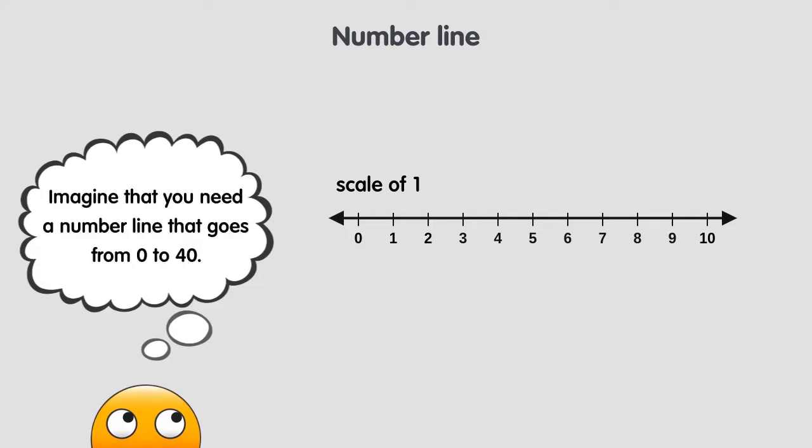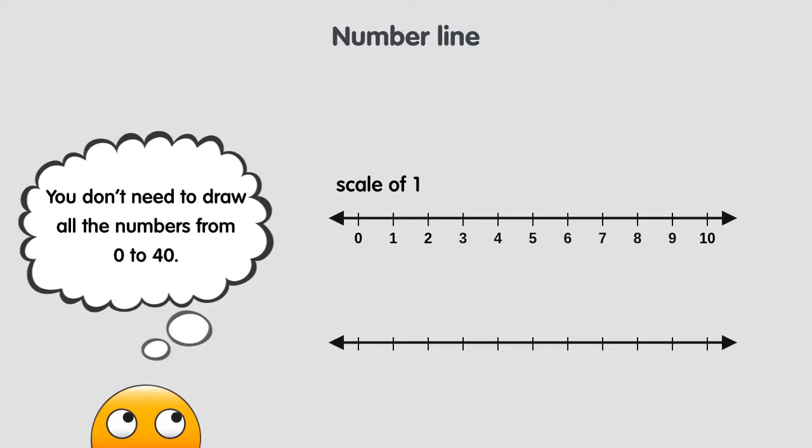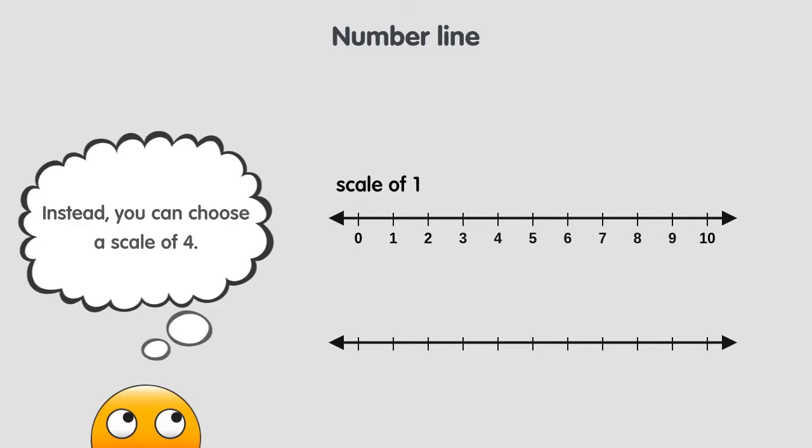For example, instead of a number line from 0 to 10, maybe you need one that goes from 0 to 40. You don't need to draw a number line that shows all the numbers from 0 to 40. Instead, you can choose a scale of 4, and just write a few numbers until you reach 40, like 4, 8, 12, 16, and so on.